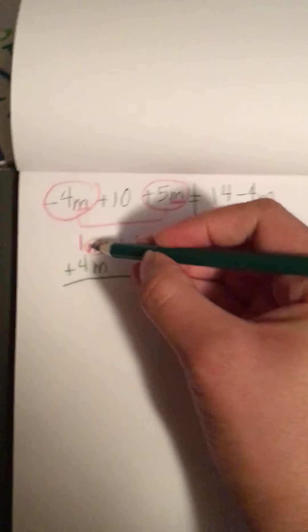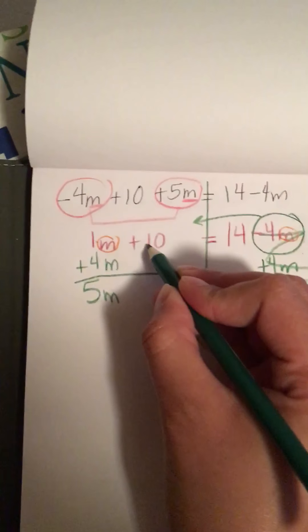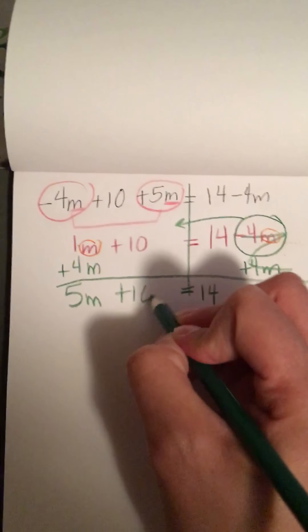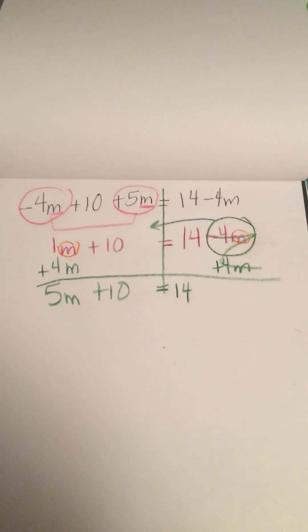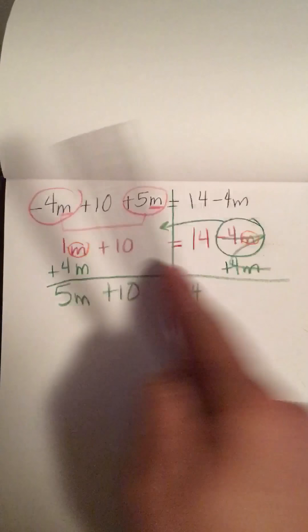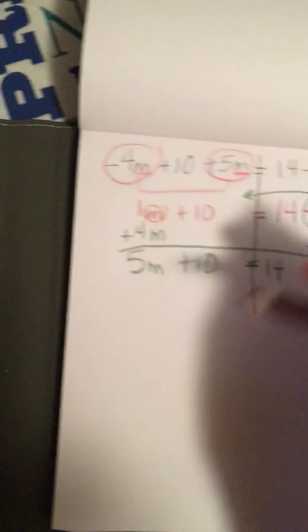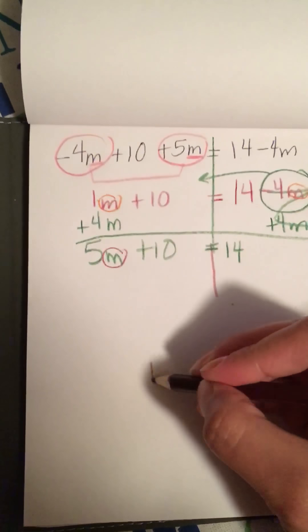This one zeros out. I still have 14 on this side. Now over here I have 5M and nothing happened to the plus 10 so it is there. On my next step, now I'm at the party. Remember I still want M, that's my goal, alone. So I'm going to concentrate on this side because M is not alone.